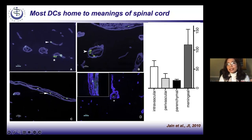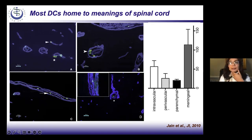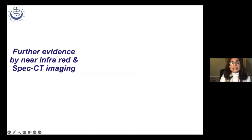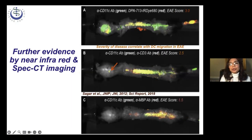When animals survived two hours after surgery, we could find where all the cells went. A large number of cells accumulated in the meninges, where the blood-brain barrier is thinner, but we also found cells in parenchymal, perivascular, and intravascular regions — showing that cells enter the CNS through various routes.